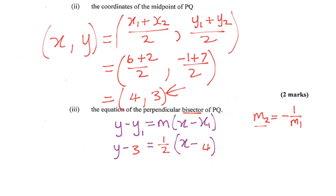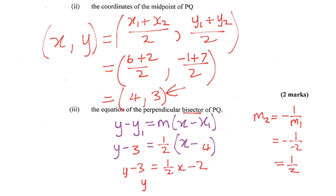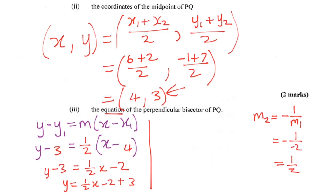So m2 equals negative 1 over negative 2, which equals a half. Now substituting into the equation: y minus 3 equals one half times (x minus 4). Multiplying out: y minus 3 equals one half x minus 2. Bringing the 3 across changes its sign to positive, so y equals one half x minus 2 plus 3, which gives y equals one half x plus 1.